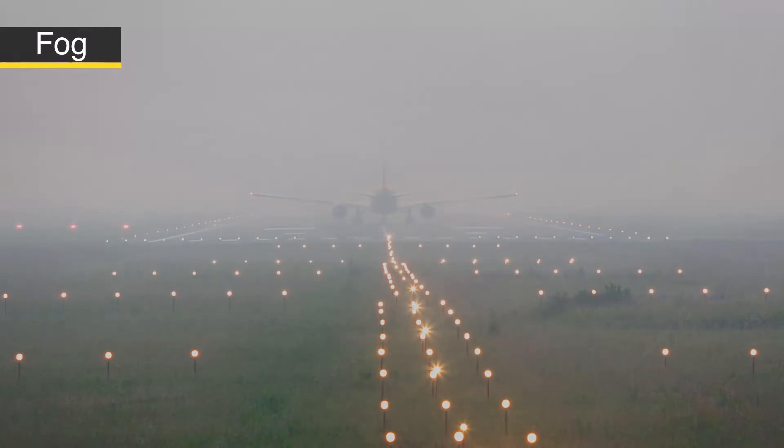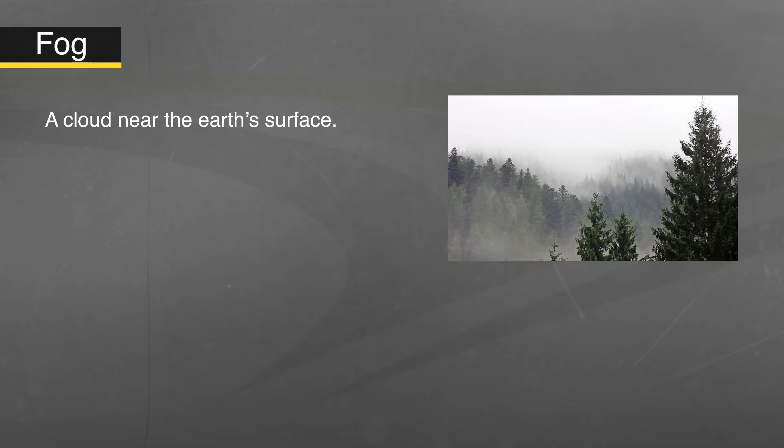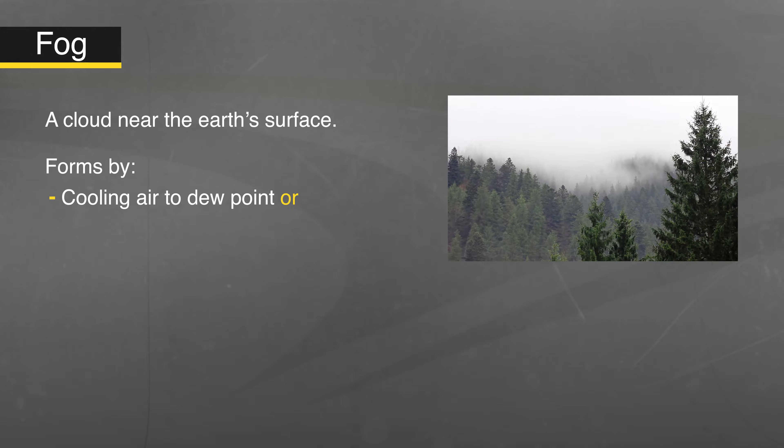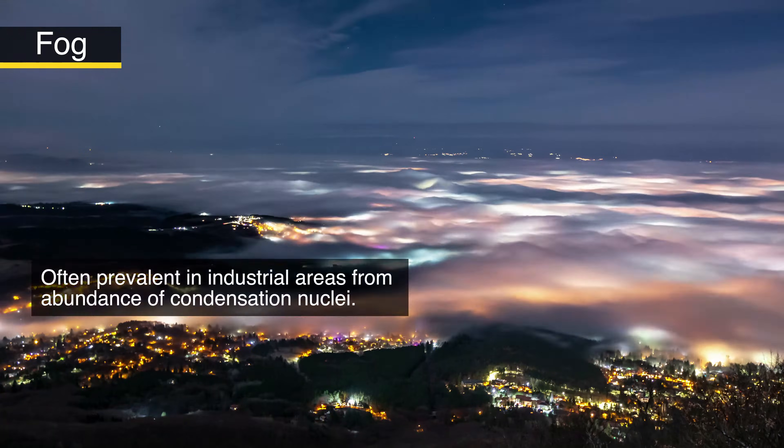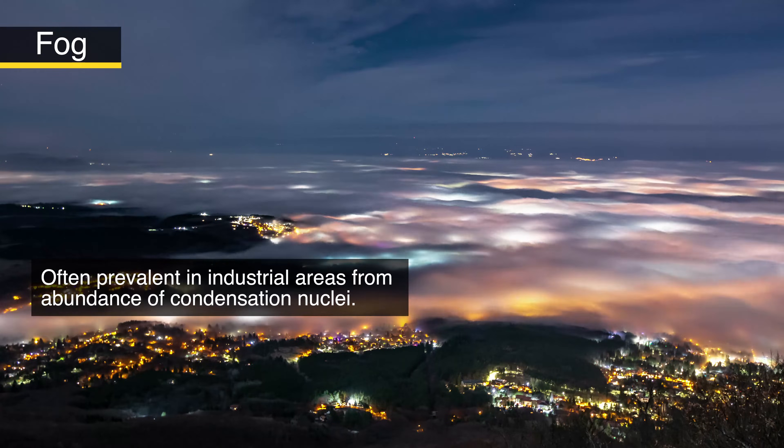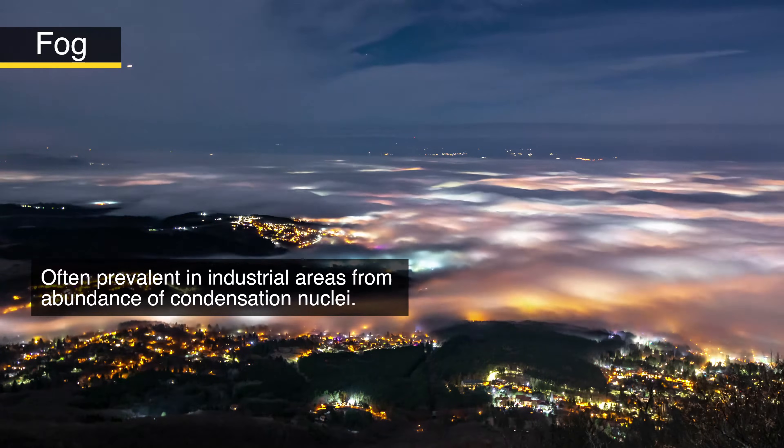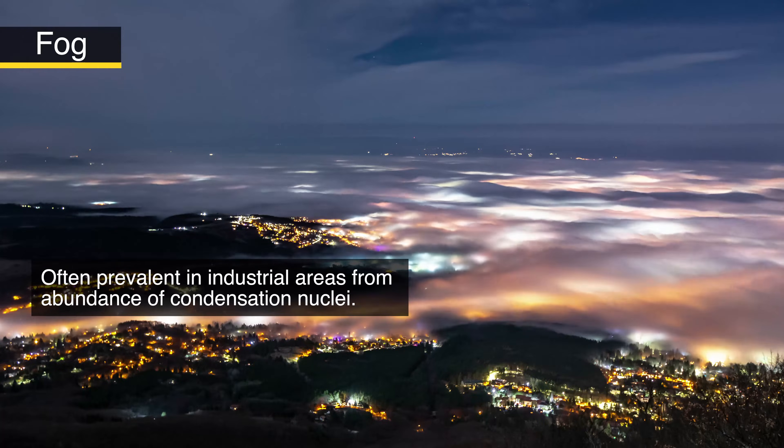Fog forms by either cooling the air to its dew point or by adding moisture to the air near the ground. Fog is usually prevalent in industrial areas because of an abundance of condensation nuclei from combustion products that gives these tiny water droplets something to stick onto.